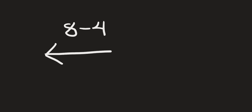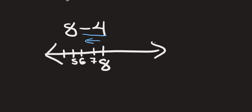Next let's say we have 8 minus 4. When we draw a number line, we're going to start off at 8. And then since we have minus 4, we're going to go 4 units to the left — 7, 6, 5, 4. 8 minus 4 is 4.